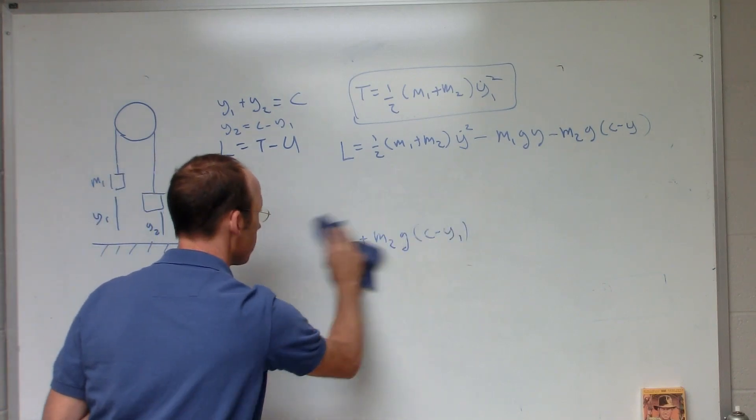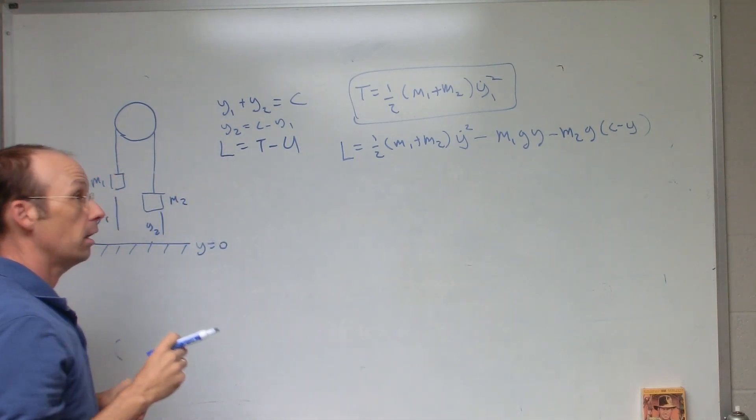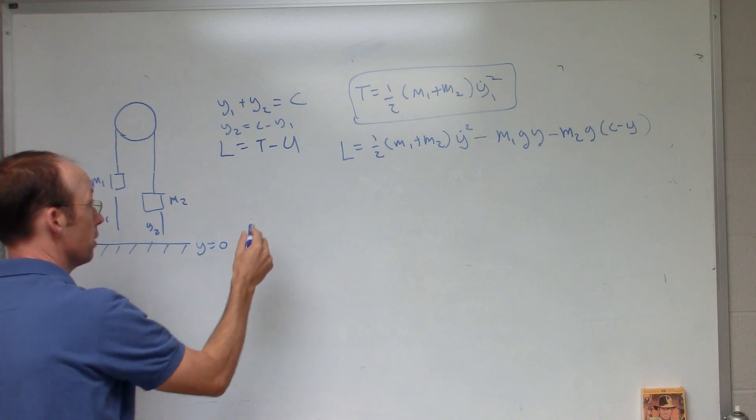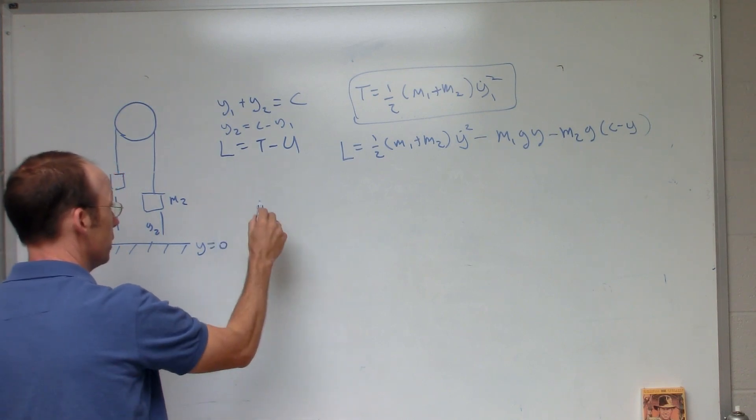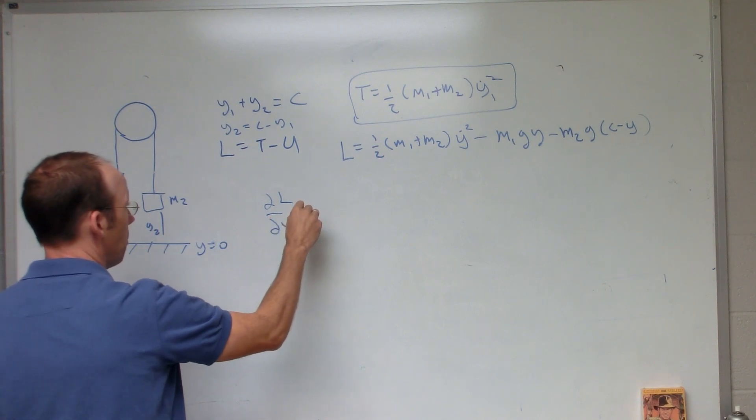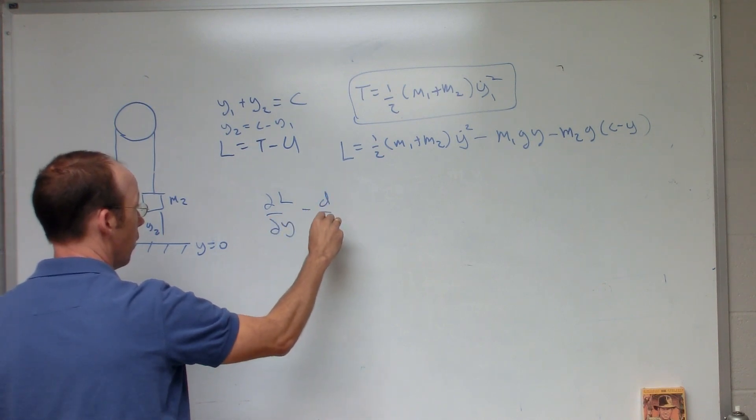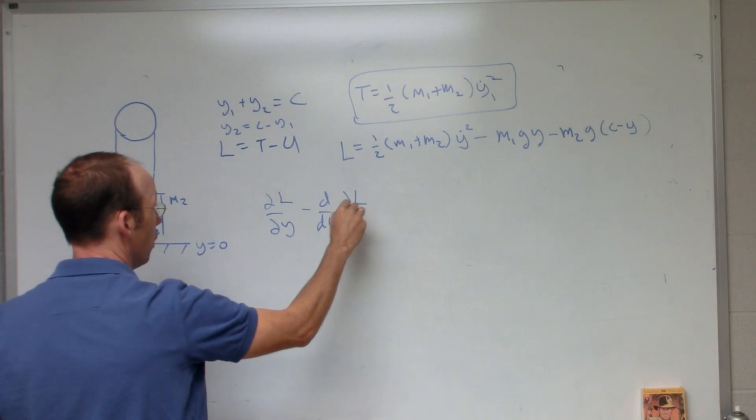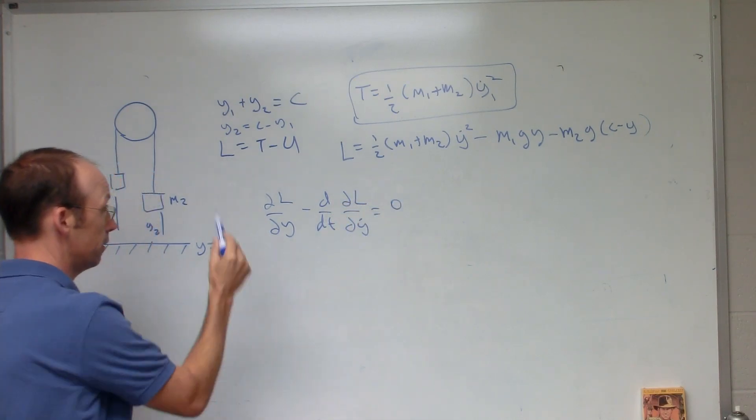So I'm going to write L equals one half M1 plus M2 Y dot squared minus M1 G Y minus M2 G C minus Y. And now, using the Euler-Lagrange equation, I can find the equation of motion because this has to be true. The partial of L with respect to Y minus the derivative with respect to time of the partial with respect to Y dot equals zero. That's the Lagrangian equation.